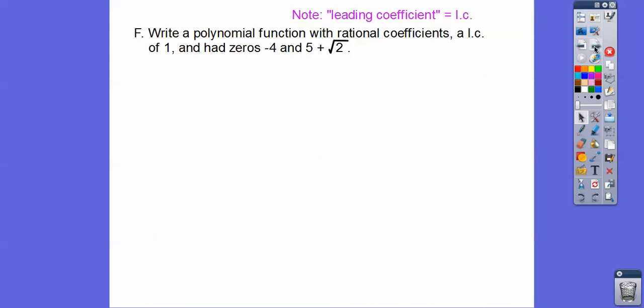All right, so lastly, you guys, write a polynomial function with rational coefficients. Again, rational coefficients are just fractions, or forms of fractions, and the leading coefficient of 1. So we've got to have like a 1x to the fourth, or whatever. And it has zeros, negative 4, and then 5 plus root 2. Now, if 5 plus root 2 is a root, then so is 5 minus root 2. So if those are all roots, then x minus all of those are factors. So x minus this guy, x minus this guy, x minus this guy, that's what this says right here.